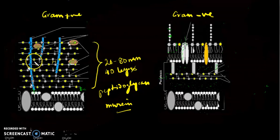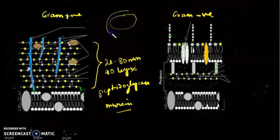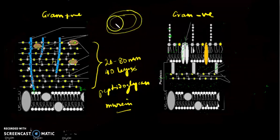The murein sacculus around the cell — the peptidoglycan sacculus around the cell — is therefore also called the murein sacculus.